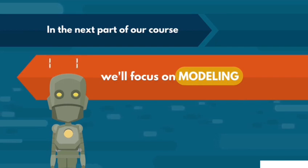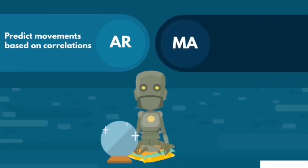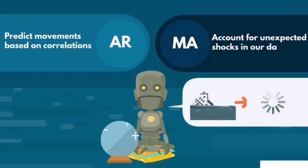First, we'll see the simplest models employed in sequential data analysis, autoregressions. These will allow us to predict movements based on correlations. We'll then go through moving averages in order to account for unexpected shocks in our data.